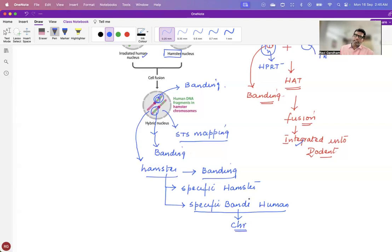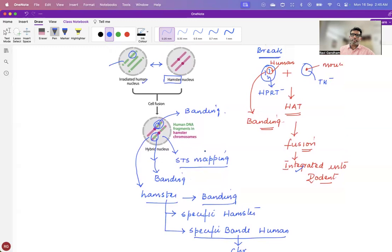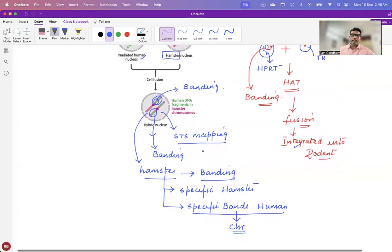And that is how these small pieces of chromosomes that are integrated into the genome of hamster are used for STS mapping.